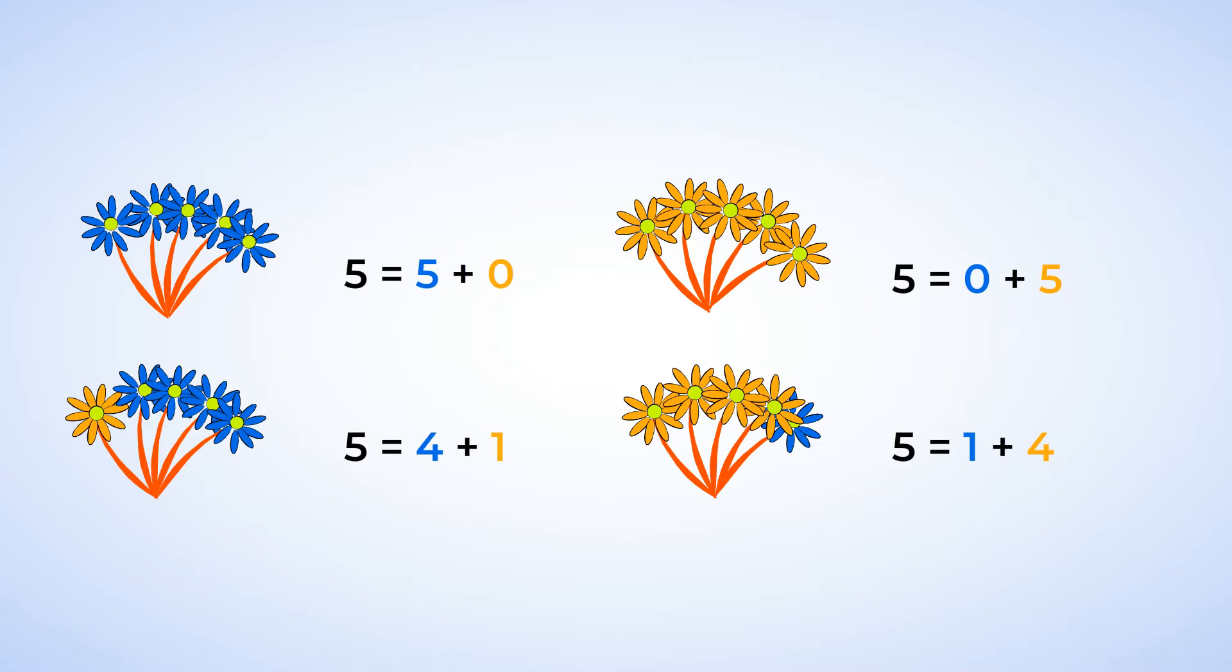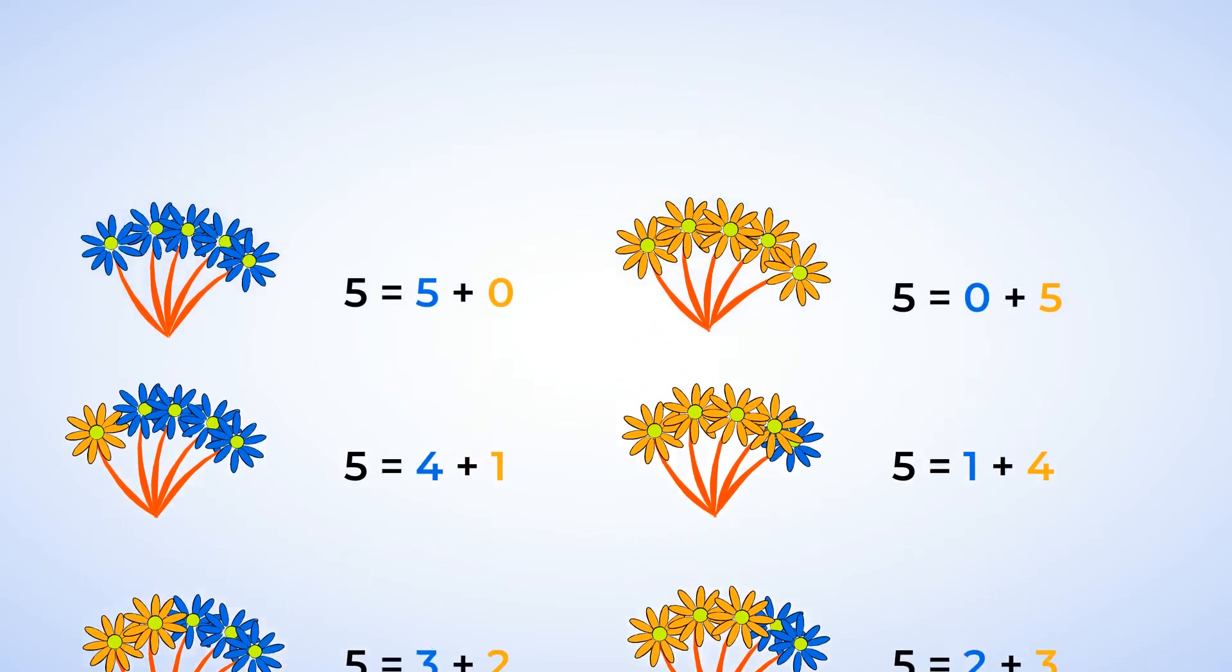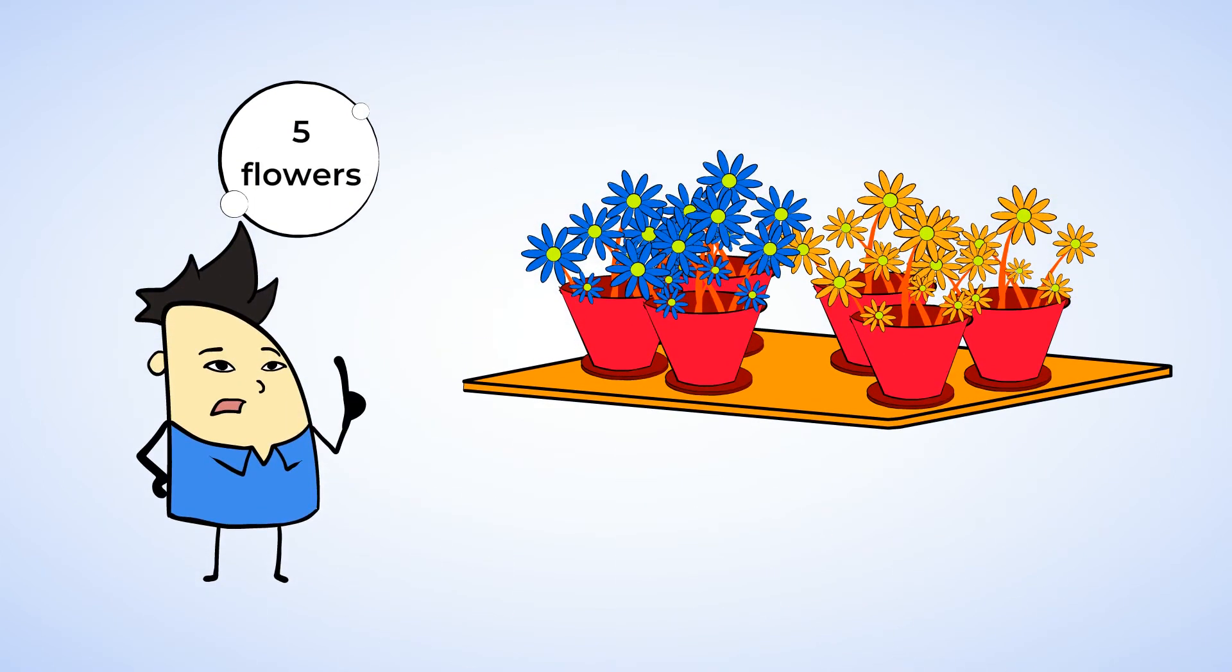So far, we've found four different ways to make five, but I bet there's more. Two blue flowers and three yellow flowers also makes five, because five equals two plus three. And we could always do the opposite again: three blue flowers and two yellow flowers also make five. Five equals three plus two. Amazing! We found all the ways to make five, and now Chen knows all the different ways he can pick out five flowers. I wonder what combination he'll choose.